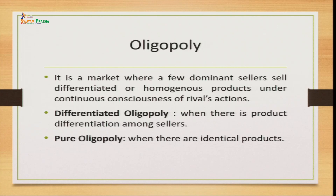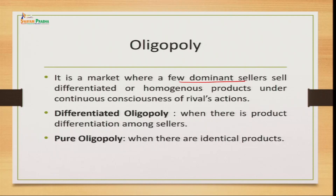The oligopoly market is a market where we have few dominant sellers. They are not very large in number, but they are dominant sellers. They sell differentiated or homogeneous products. If firms in the oligopoly market have different products, we call it differentiated oligopoly. Whereas if the products being sold are of similar or identical nature, it is called pure oligopoly.